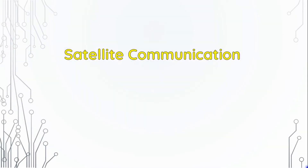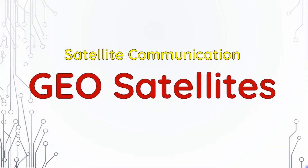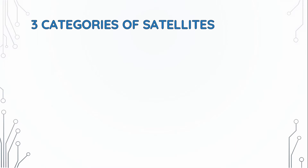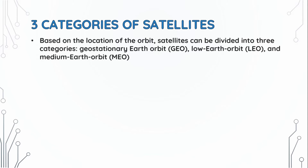Today we are going to discuss satellite communication with geosatellites. In the previous video, we showed three categories of satellites. Based on the location of the orbit, satellites can be divided into three categories: geostationary earth orbit, low earth orbit, and medium earth orbit. In this video, we will discuss geostationary earth orbit, or geosatellites.